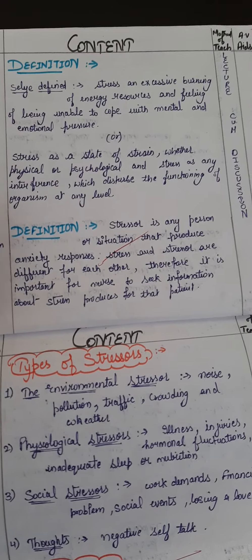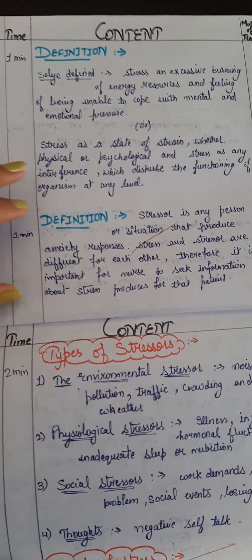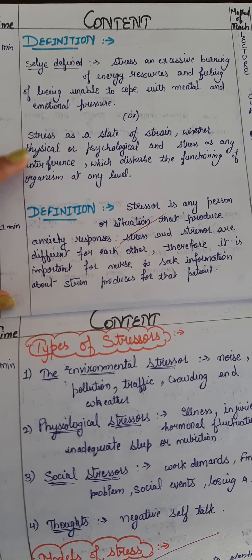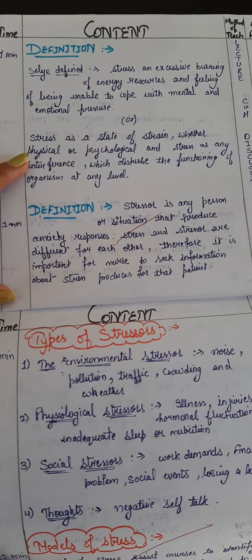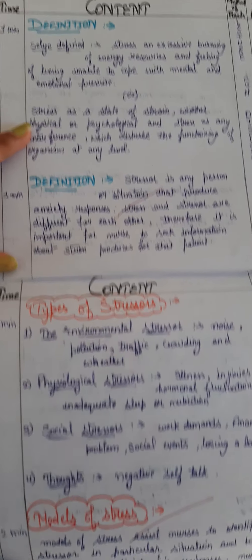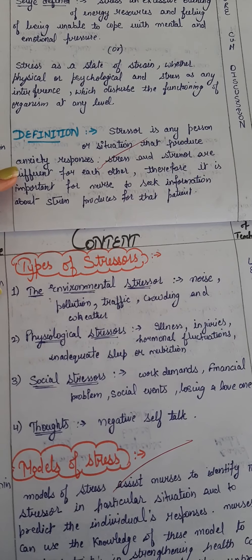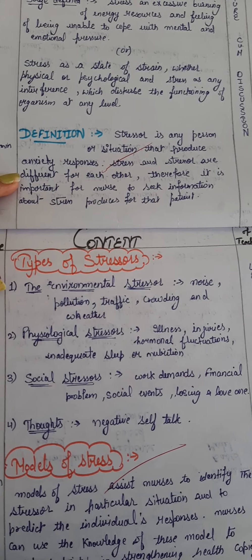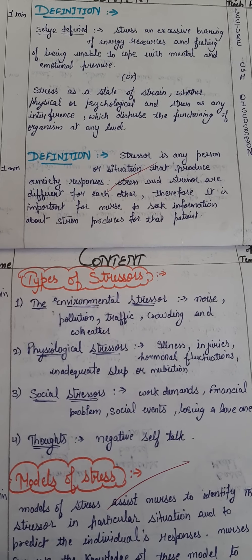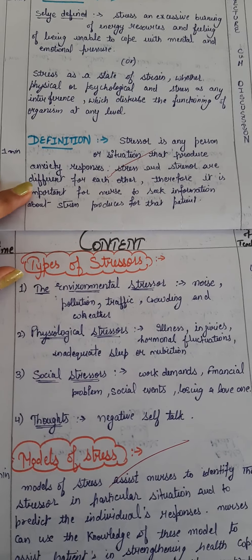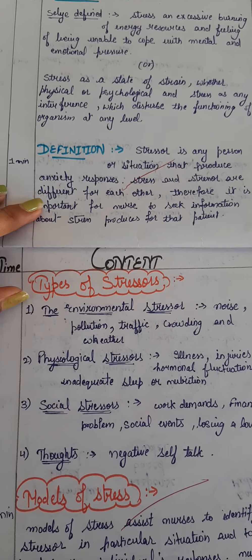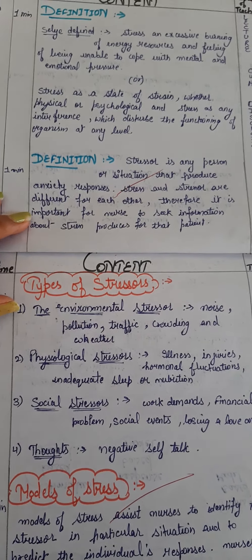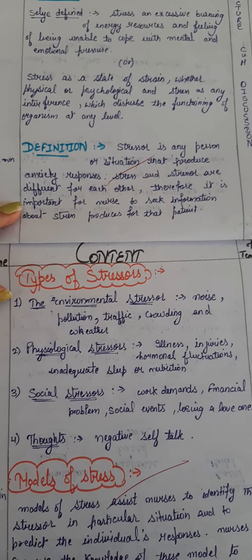Stress is an interference that disturbs the functions of the organism. Whenever we are suffering from stress, our physiological and psychological functioning gets altered and disturbed. The third definition is that stress is a situation that produces an anxiety response — stress absolutely produces anxiety responses in our body.